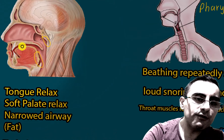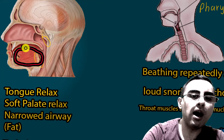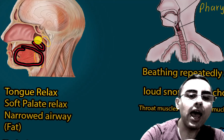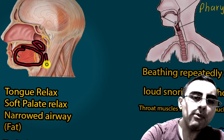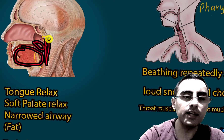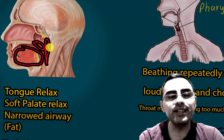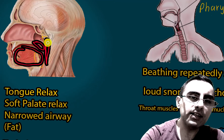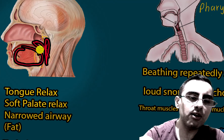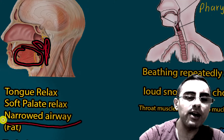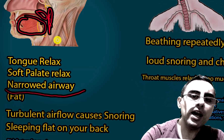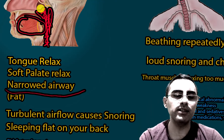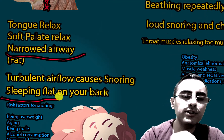Snoring is caused by relaxation of the tongue, which is a huge muscle in our oral cavity. Relaxation of the soft palate and the posterior wall of the pharynx are also important, especially during deep sleep or REM sleep. Their relaxation leads to narrowed airways, where airflow becomes turbulent, and we hear that turbulent airflow as snoring.